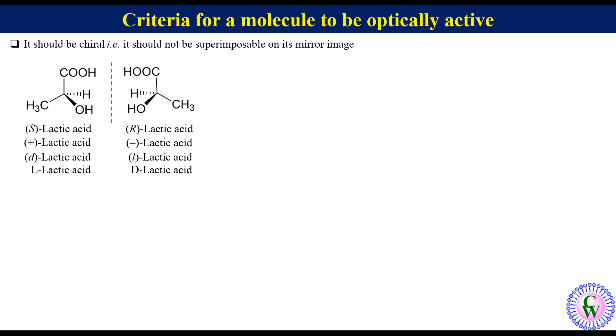For a molecule to be optically active, it may or may not have a chiral center. For example, this biphenyl derivative doesn't have any chiral center but it is still optically active due to the presence of chiral axis.